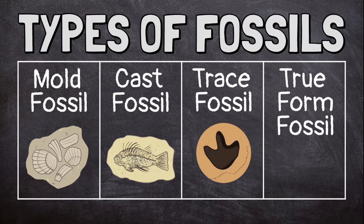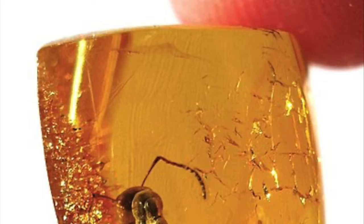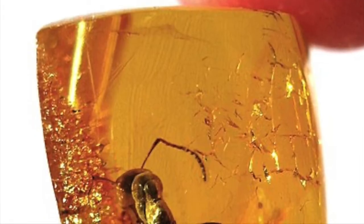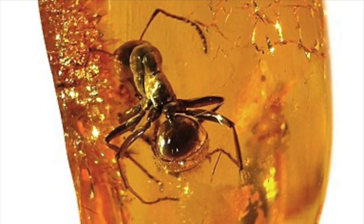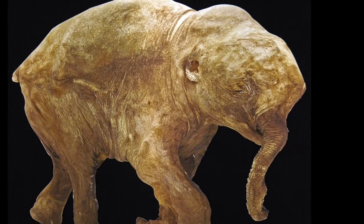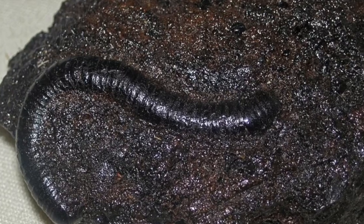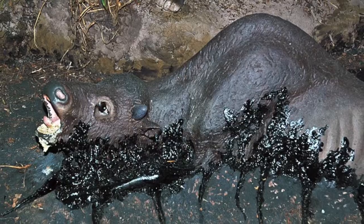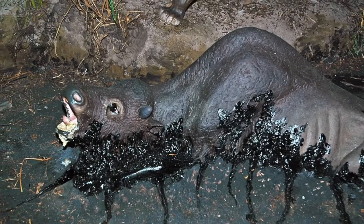A true form fossil is not made of stone like most fossils — it is the actual preserved body of an animal. This happens when the animal gets caught in sticky sap that turns into amber, is frozen in ice, or trapped in a tar pit. The animal's body cannot decay and is preserved.